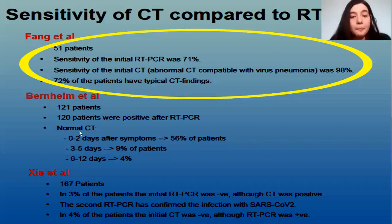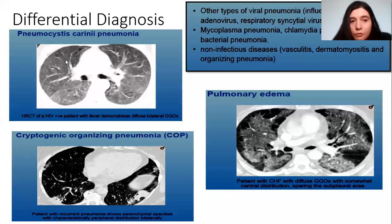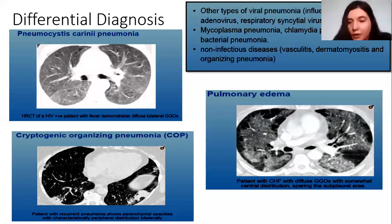For differential diagnosis, many diseases have similar appearances. Pneumonia in HIV patients has a diffuse bilateral ground glass appearance, which is different from COVID-19, which is more patchy. With cryptogenic organizing pneumonia, patients show parenchymal opacities with characteristically peripheral distribution. Pulmonary edema is more central, whereas COVID-19 findings are more peripheral than central.